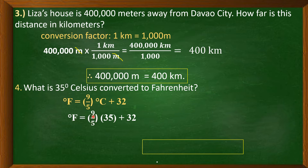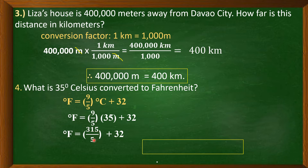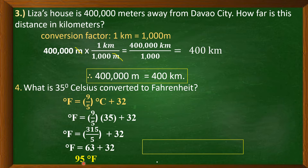Now simplify. 9 times 35 is 315, divided by 5, plus 32. 315 divided by 5 equals 63. Then 63 plus 32 equals 95. Therefore, 35 degrees Celsius is equal to 95 degrees Fahrenheit.